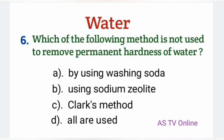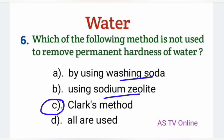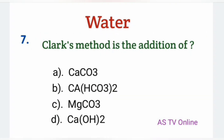No. 6: Which of the following method is not used to remove permanent hardness of water? By using washing soda, using sodium zeolite, Clark method — all are used. Right answer is C, Clark method. Washing soda اور sodium zeolite یہ permanent hardness کو remove کرنے کے لئے use ہوتے ہیں لیکن Clark method یہ temporary hardness کو remove کرنے کے لئے use ہوتا ہے.